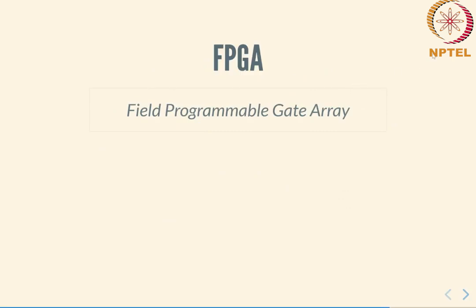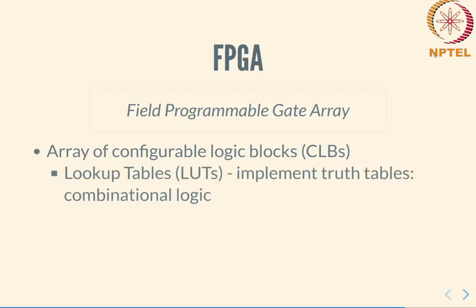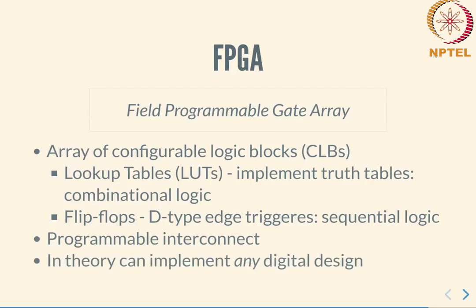This is where the FPGA comes in. An FPGA — field programmable gate array — is essentially a two-dimensional grid of configurable logic blocks. A logic block has two parts: a lookup table, which implements the truth table of a Boolean function and can implement any kind of combinational logic; and a D-type edge-triggered flip-flop, used to implement sequential logic. Combined with a programmable interconnect, an FPGA can in theory implement any kind of digital design. The only restrictions are the capacity of the FPGA and speed constraints.